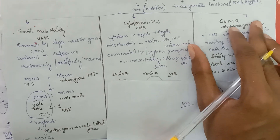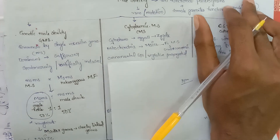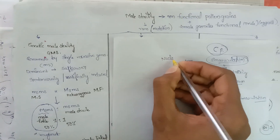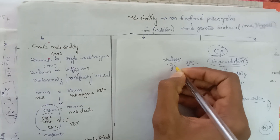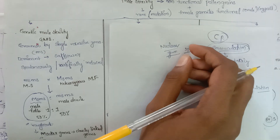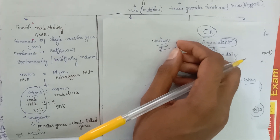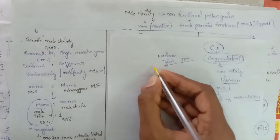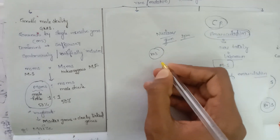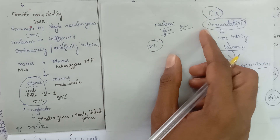Firstly, let us discuss about Genetic Male Sterility. Genetic male sterility is governed by nuclear genes which control the entire cell. It is usually a single recessive gene, denoted as small 'ms'. Rarely it is dominant, as in the case of safflower.